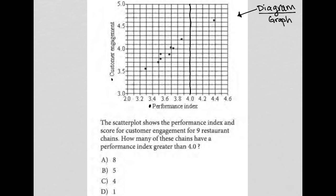So everything to the left of that has a performance index that is less than four. And if you're to the right of that, then you have a performance index that is greater than four. All right, less than four, greater than four.